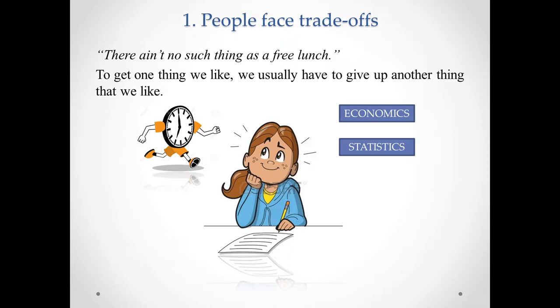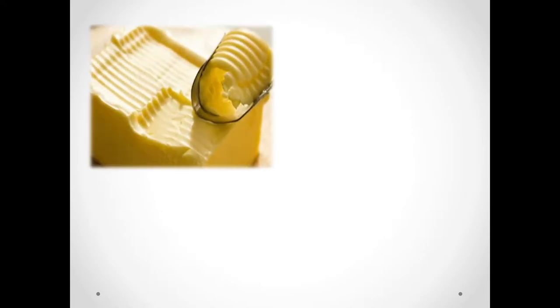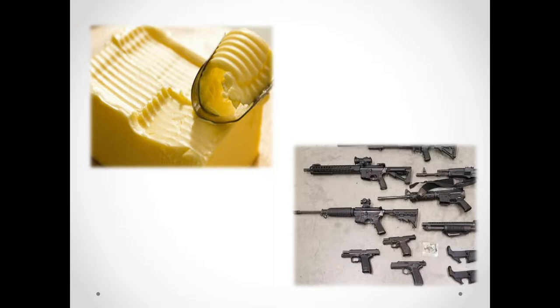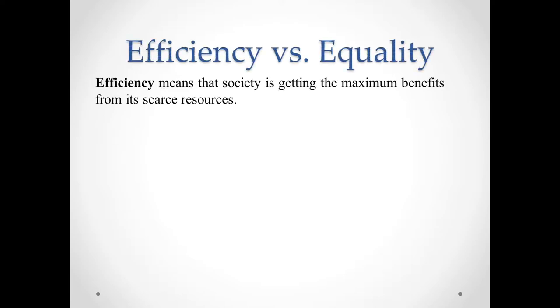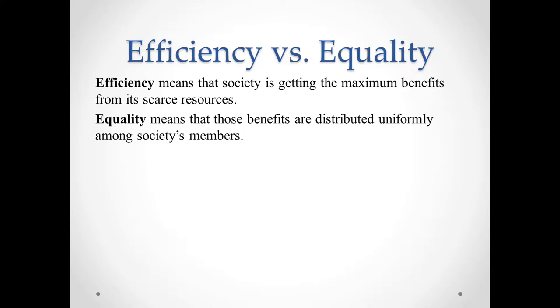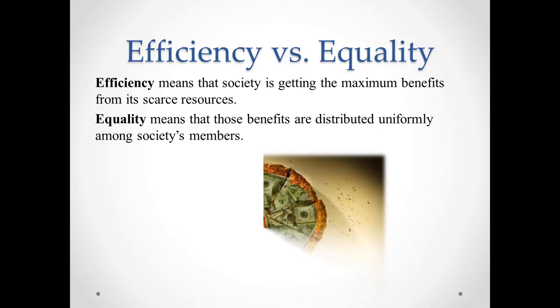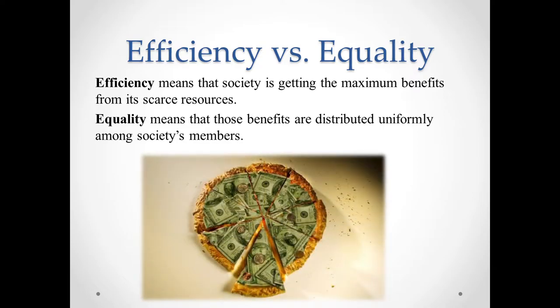When people are grouped into societies, they face different kinds of trade-offs. One classic trade-off is between butter and guns — the more a society spends on national defense, the less it can spend on consumer goods. Another trade-off is between efficiency and equality. Efficiency means society is getting maximum benefits from its scarce resources, whereas equality means those benefits are distributed uniformly among society's members. Efficiency refers to the size of the economic pie, and equality refers to how the pie is divided into individual slices.